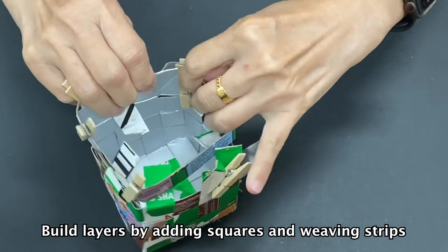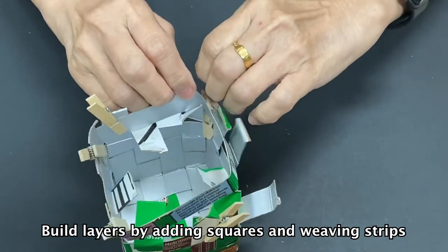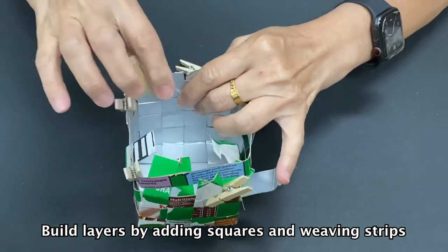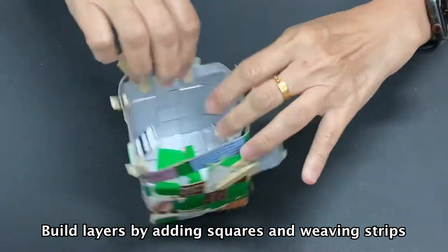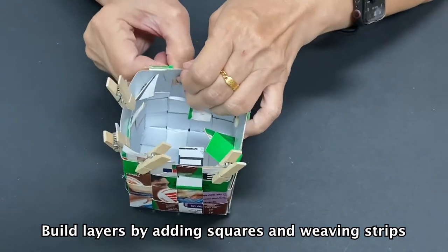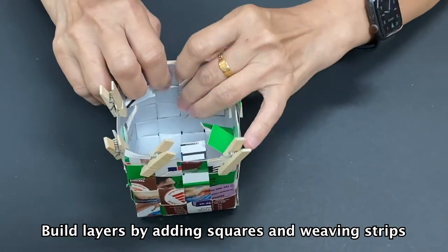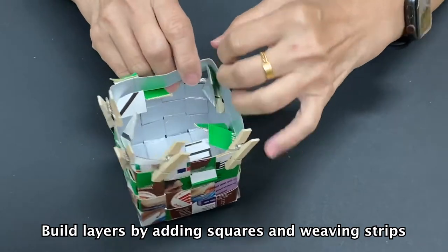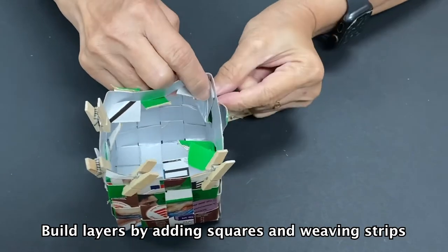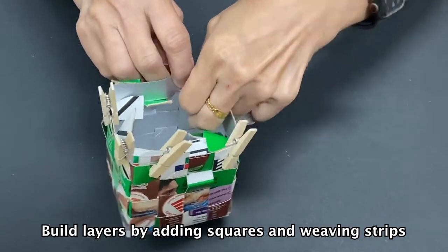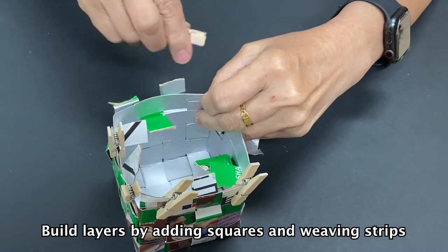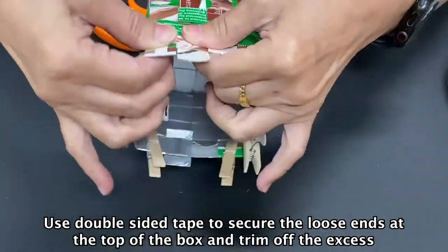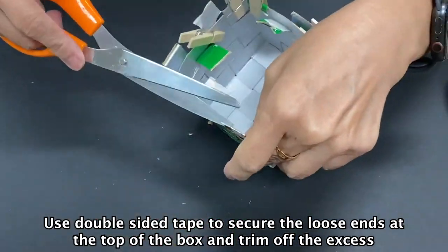Build layers by adding squares and weaving strips. Use double sided tape to secure the loose ends at the top of the box and trim off the excess.